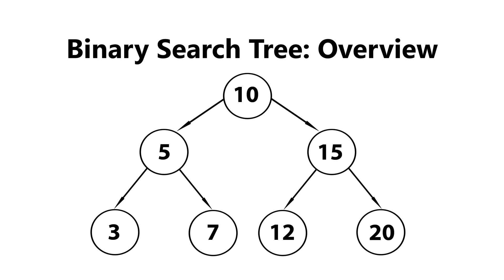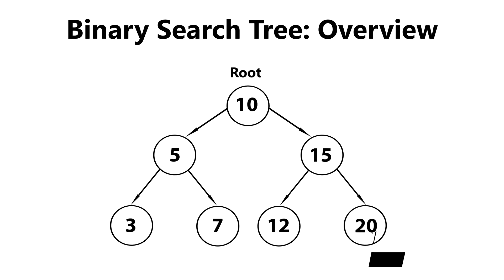Now, the topmost node within a given tree is called the root node. In this case, the root node for this tree is 10. A parent node is a node that has an edge connecting to a child. Using our root node as an example, we can say that 10 is a parent of both 5 and 15, and both 5 and 15 are considered child nodes of 10. Another example: 5 is the parent node of both 3 and 7, and 3 and 7 are both child nodes of 5.